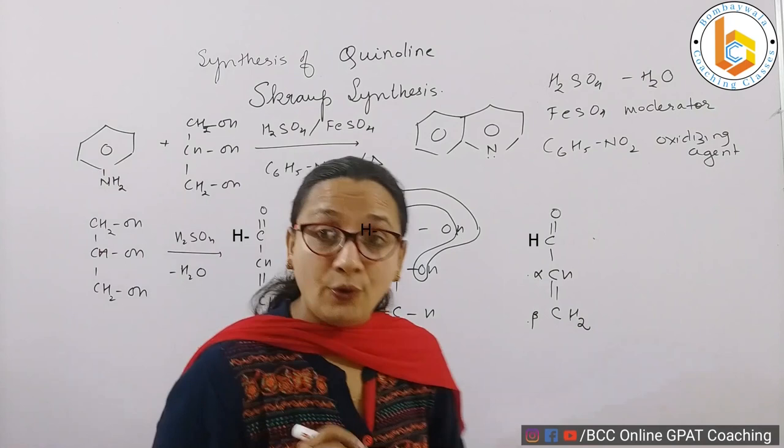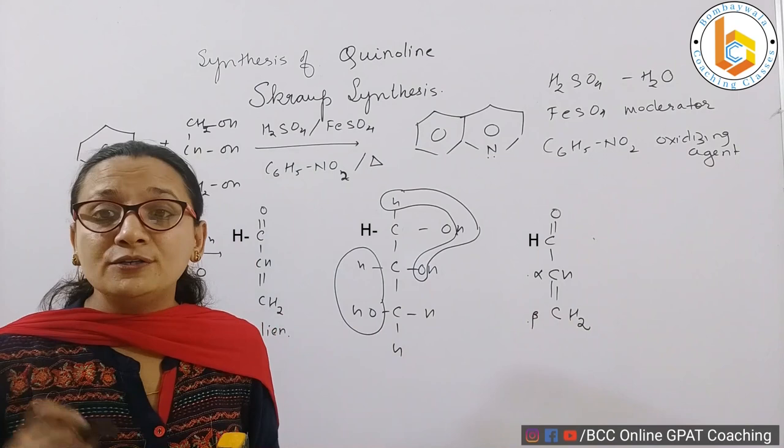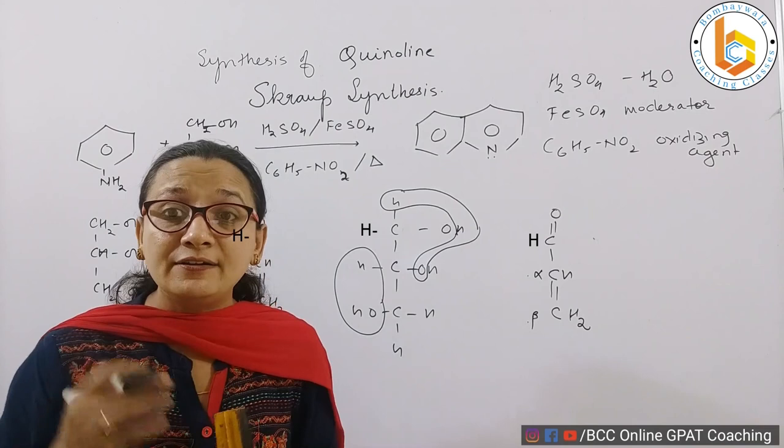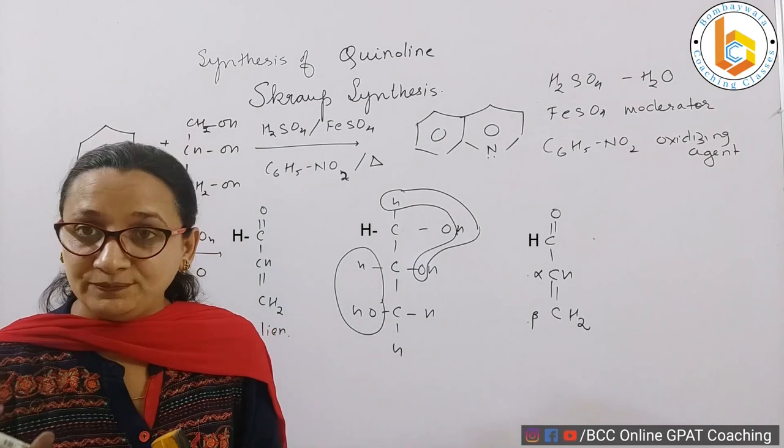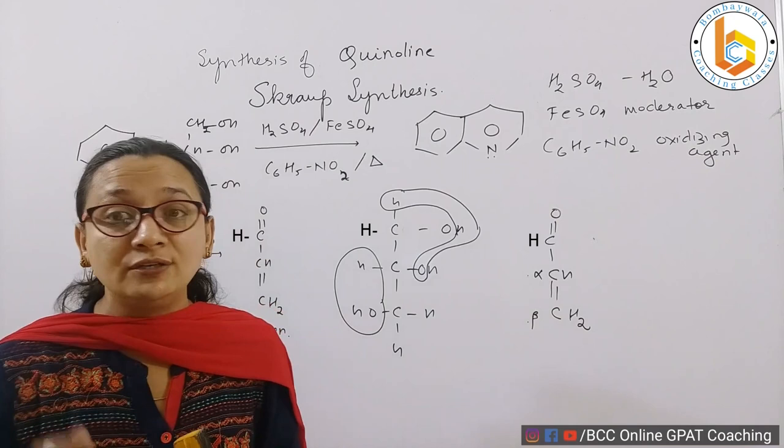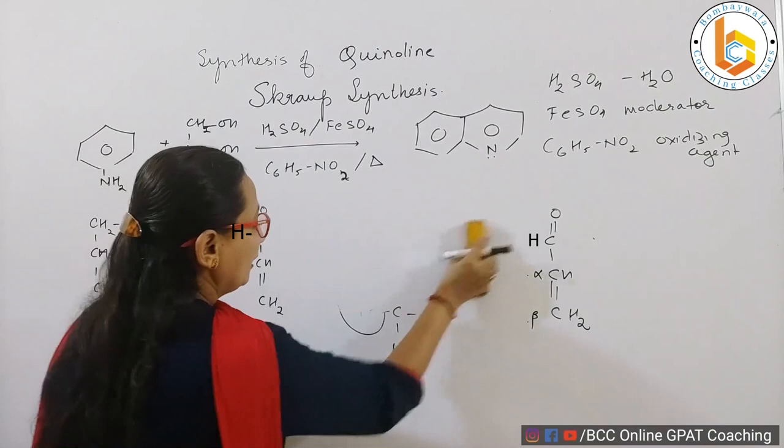And you know I have published a video on a reaction called Michael addition. My dear students, acrolein or alpha-beta unsaturated carbonyl compounds have this characteristic behavior that they show 1,4-addition reaction. The purpose of forming acrolein is that it can show 1,4-addition reaction. Now let us see what this acrolein is going to do.